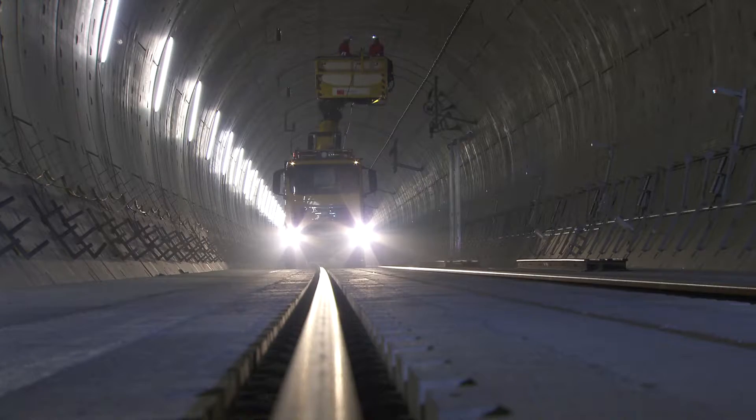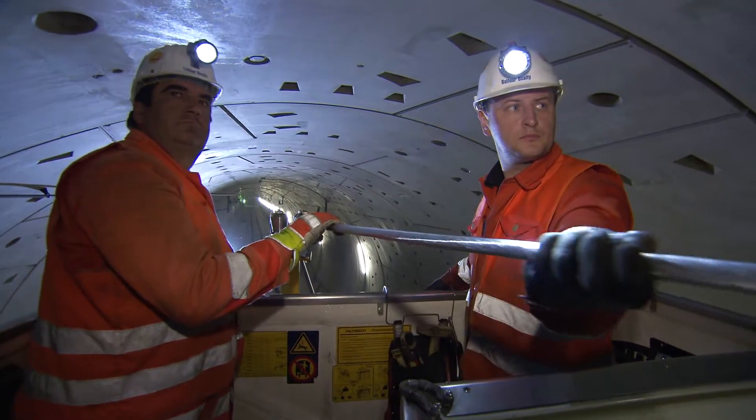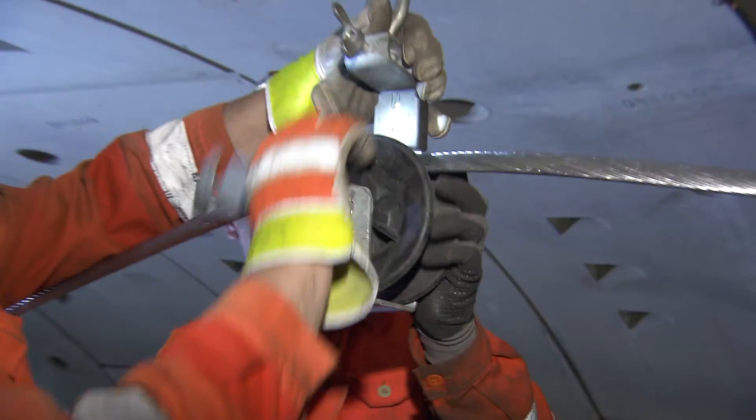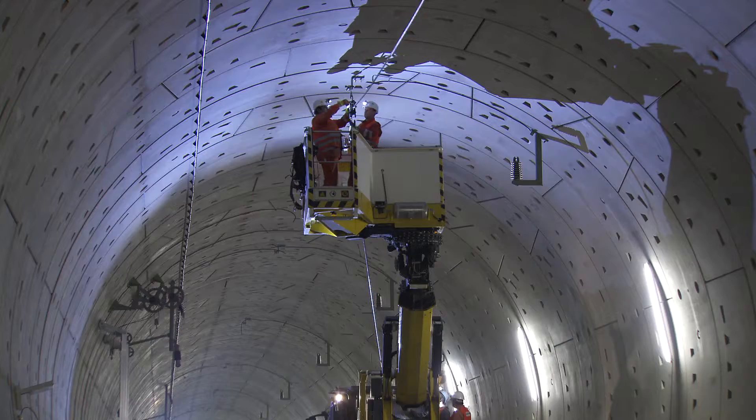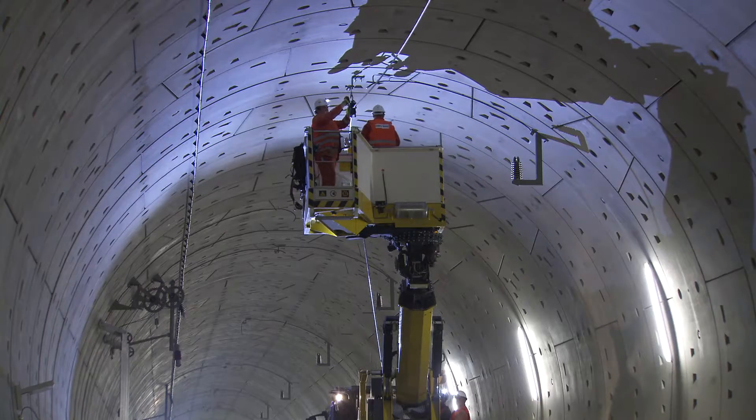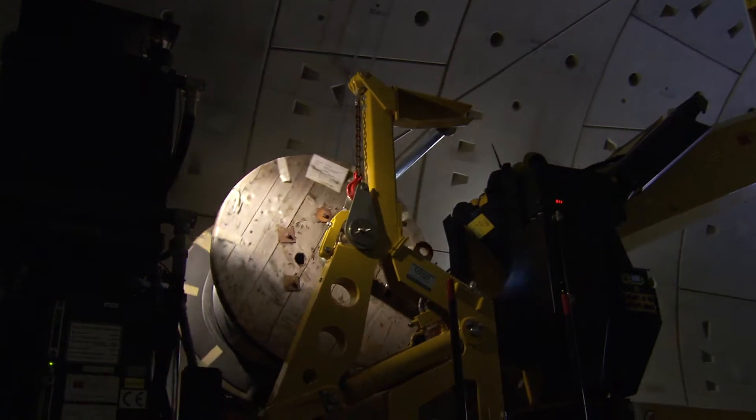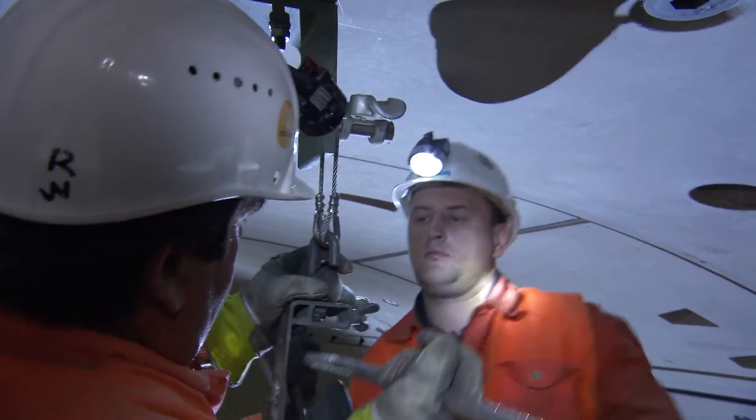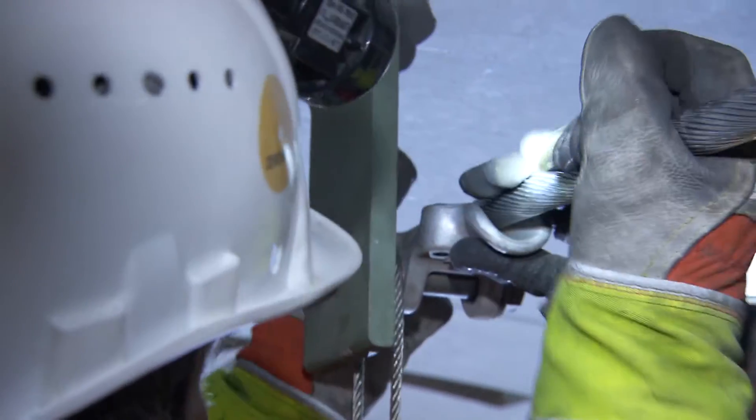Principally, traction current flows from the substation and along the overhead contact line to the power consumers on the vehicle, then back along the rails to the substation again. Inside the tunnel, all components, such as suspension pillars and cantilevers, have to be earthed. This is why they are connected with the return conductor that the men are installing in the tunnel roof.